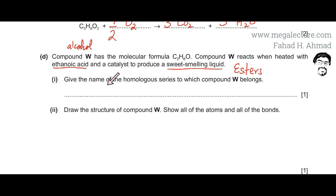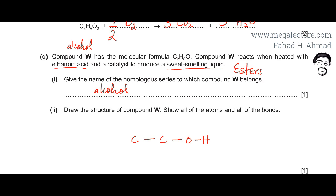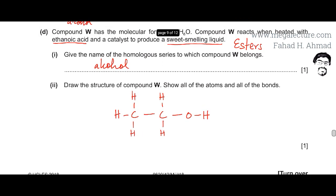So the homologous series to which compound W belongs is alcohols, because it is producing an ester with a carboxylic acid. Drawing the structure of compound W: it is a 2-carbon atom alcohol with 6 hydrogens and 1 oxygen. Drawing 2 carbon atoms with an OH group, completing 4 bonds — carbon bonded to 2 hydrogens on one side and 3 hydrogens on the other side. This is the structure of the alcohol.